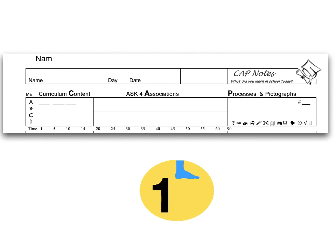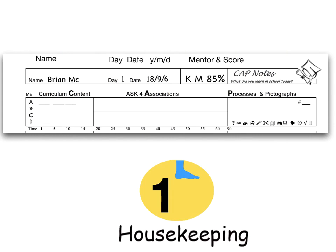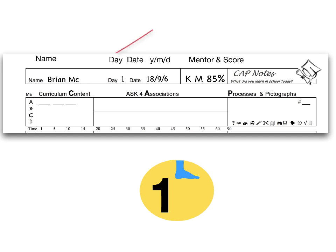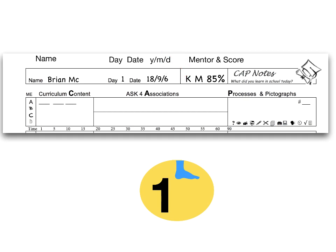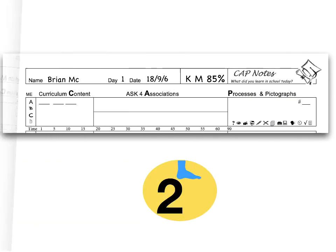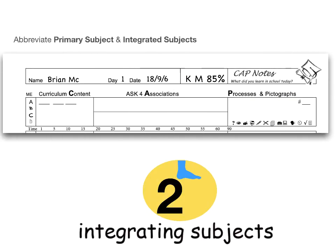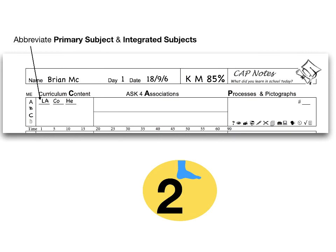Now we start the 10-step process in creating cap notes. Step 1: enter your name, date, and day if your school is on a six-day cycle. The second box is for your partner's initials, if one was assigned. A score may be entered later if you decide to evaluate cap notes. Step 2: integration of subjects. Integration is a way to get through curriculum demands — just do your best.